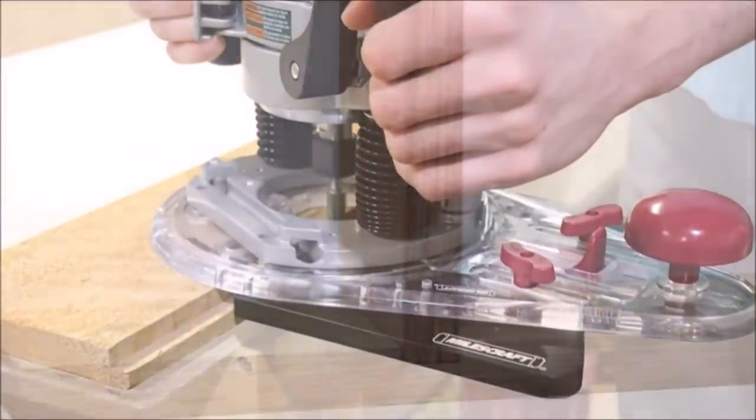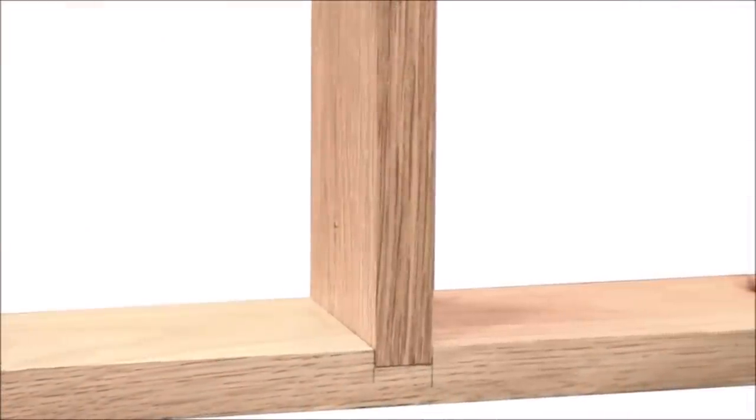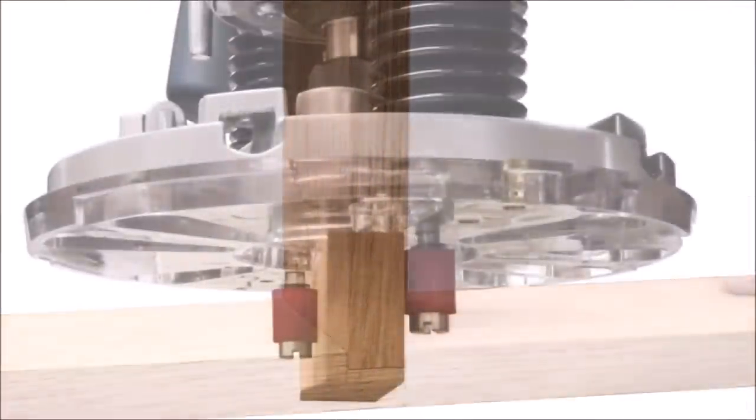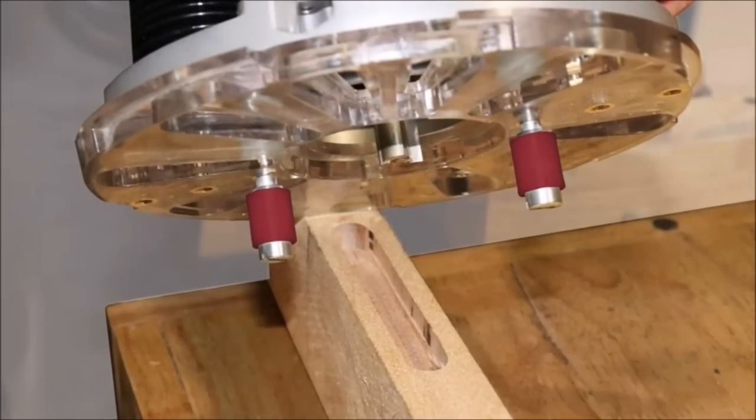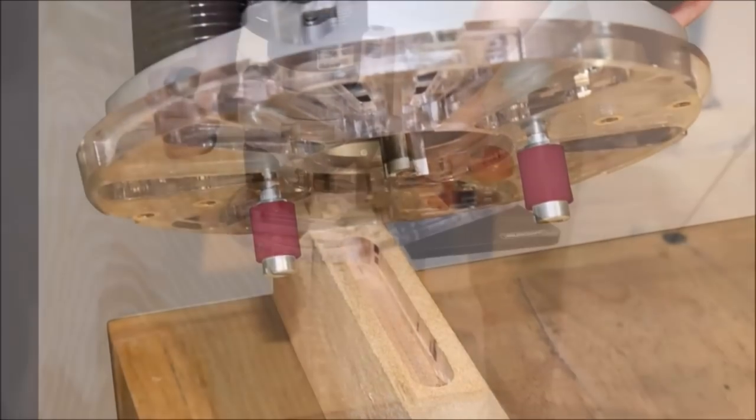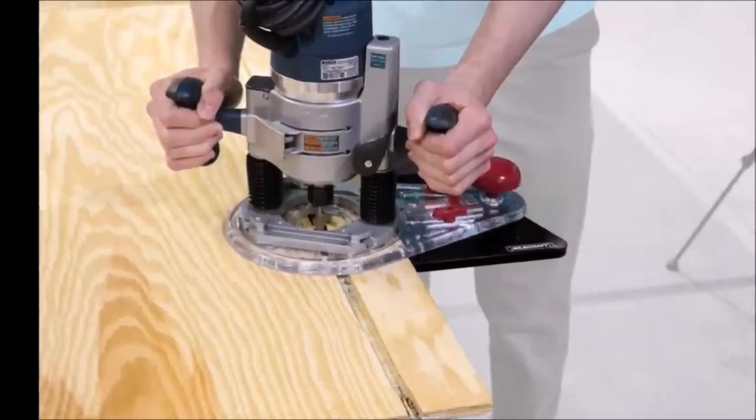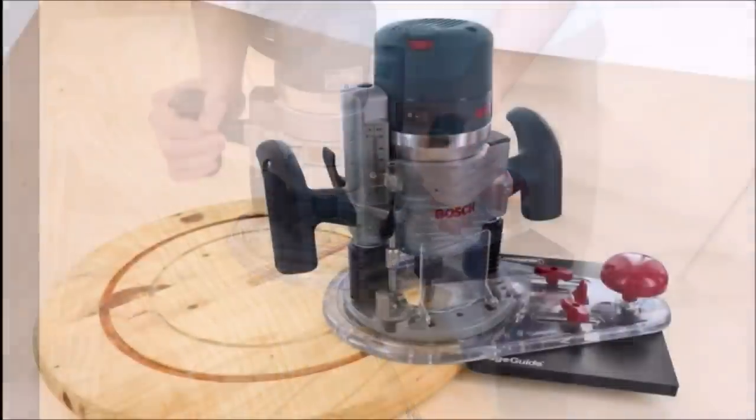With the edge guide, you can cut grooves, dados, and rabbets. Mortise pins are included and have different mounting locations on the base to allow for a variety of wood thicknesses. The offset base coupled with the edge guide allows for finishing along straight or curved edges.